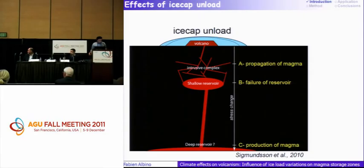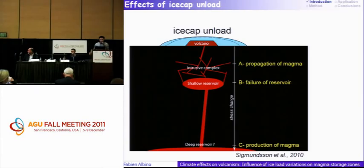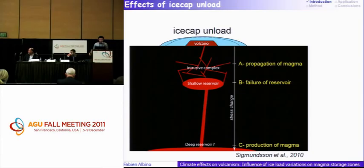Both changes at the surface cause a load change. From my numerical modeling, I quantify how stress variation in the crust can affect the magma system of volcanoes. We can define three different mechanisms due to ice cap unloading: it can influence the propagation of magma, the failure of a shallow reservoir, and the production of magma at deep levels. My research focuses only on the shallow parts — on the failure of the reservoir.